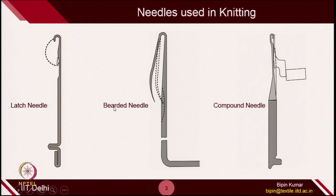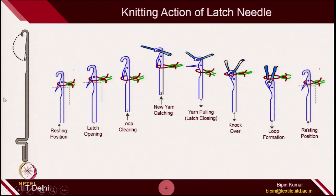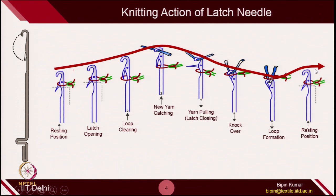Let's have a quick recap of the loop formation process. The reciprocative movement of the needle is done with the help of the cam track. The butt is engaged with the cam track, and because of this a certain sequence is followed by the needle, forming the loop. It started with latch opening as the needle raises, then the loop is cleared, then new yarn is cast, then yarn is pulled. Once the latch gets closed, the old loop is knocked out, and the needle descends to create the loop, then goes back to its resting position.